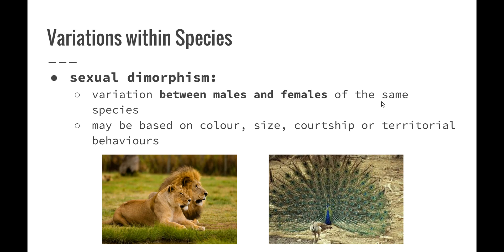What about some particular variations within individual species? One type of variation is called sexual dimorphism. This occurs when there is a variation between males and females of the same species. It can be based on different things such as colour, size, courtship, or territorial behaviours.